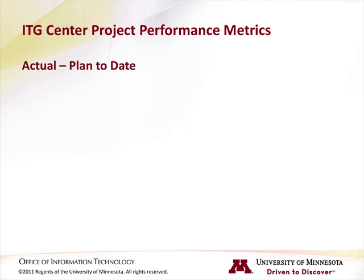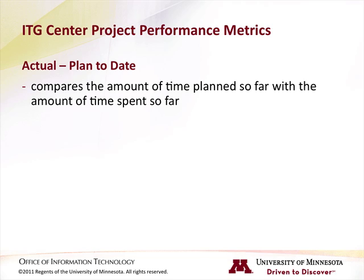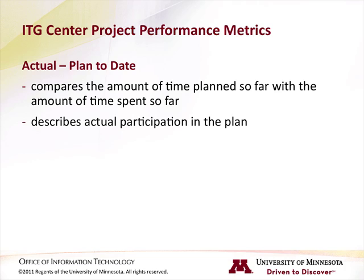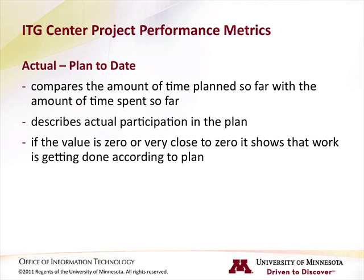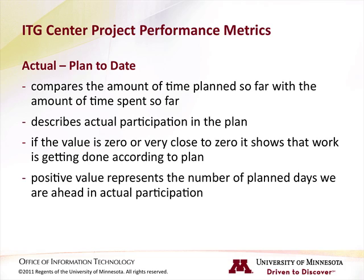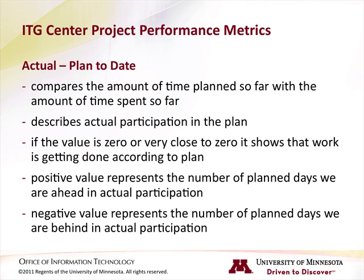Actuals minus plan to date compares the amount of time planned so far with the amount of time spent so far. It describes actual participation in the plan — it's not measuring what we're accomplishing for the work we're doing, but whether we've spent the planned number of days on an activity. If the value is 0 or very close to 0, it shows that the work is getting done according to the plan. A positive value represents the number of planned days we are ahead, and a negative value represents the number of planned days we are behind in actual participation.